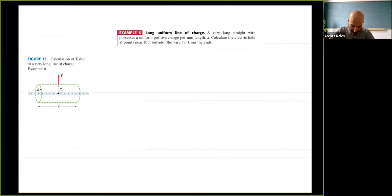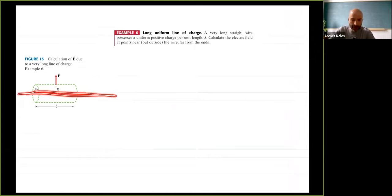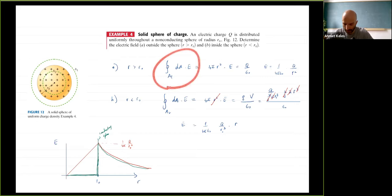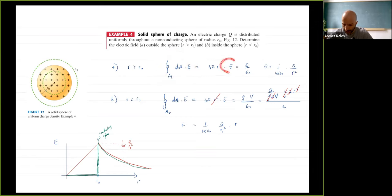Now let's look at a different geometry: a long line of uniform charge extending from minus infinity to plus infinity. Step one: choose a Gaussian surface on which the electric field is constant, so we can take E outside the integral and just calculate the area. The electric field is constant on the chosen surface, so E times the area equals total charge inside over epsilon-naught, and this gives the electric field.